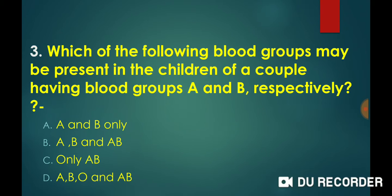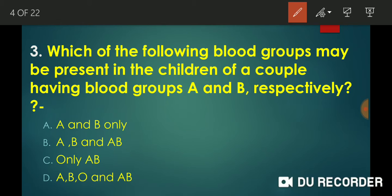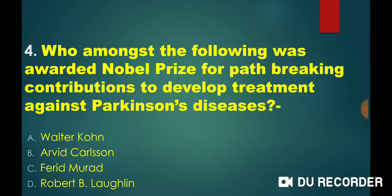Which of the following blood groups may be present in the children of a couple having blood groups A and B respectively? If one parent has blood group A and the other has blood group B, the possible blood groups for their children include A, B, AB, and O. So all of A, B, AB, and O are possible — that is the correct answer.